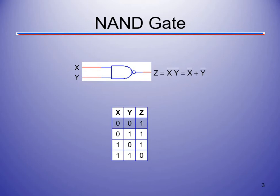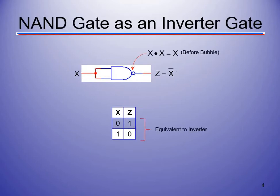Looking at the truth table, the NAND is the exact opposite of AND. When X and Y are both zero, AND gives zero, then we invert it so the output is one. Zero and one gives zero, inverted to one. One and zero gives zero, inverted to one. One and one gives one, but the bubble inverts it and we get zero. That's how we go through the truth table for a NAND gate.